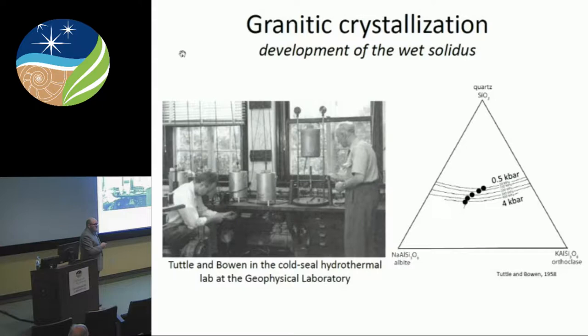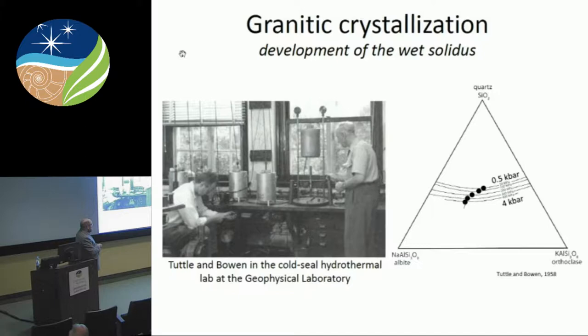The reason most of us think granites formed at around 700 degrees or maybe a little lower is due to work done primarily here at the Geophysical Laboratory by the fathers of experimental petrology — Tuttle, Bowen, and Shriver, and others. This is the quartz-albite-orthoclase ternary diagram, familiar to anyone who's taken a petrology class. Up at the top is pure SiO₂; at the bottom is pure sodic feldspar and pure potassic feldspar. These curves are cotectic curves, and at 0.5 kilobars this curve represents the low temperature end of the melting.